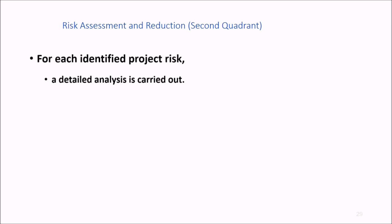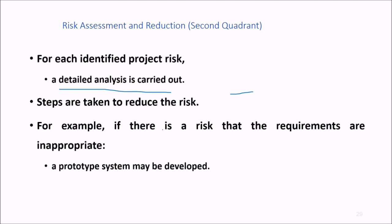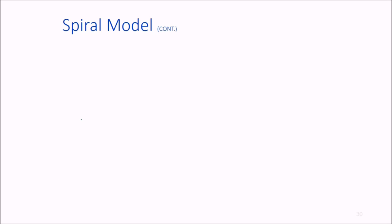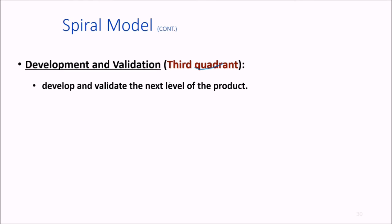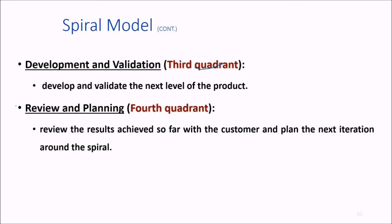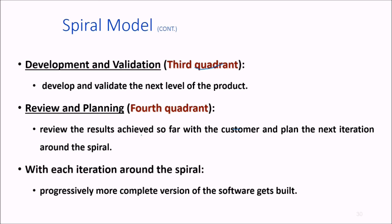The second quadrant is risk assessment and reduction. For each identified risk, we carry out detailed analysis and take steps to minimize the risk. For instance, if requirements are inappropriate, a prototype may be developed. The third quadrant is development and validation of the next level of product. The fourth quadrant is review and planning, where we review results achieved with the customer and plan the next iteration. With each iteration around the spiral, progressively more complete versions of the software are built.